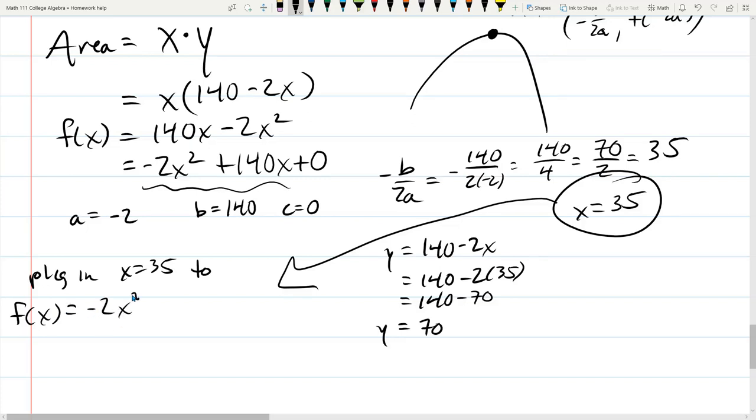Negative 2X squared plus 140X. Now I'm going to do something a little weird. I'm going to get in this form. Why? Because X is 35 and this thing, 140 minus 2X, is 70. We have that written down right all over the place over there.